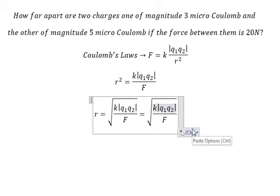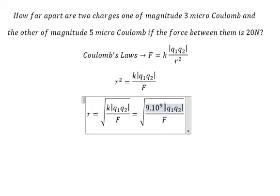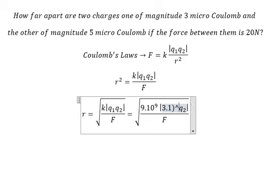So k is 9 times 10 to the power of 9, and q1 is 3 microcoulombs, which I'll write as 3 times 10 to the power of negative 6.